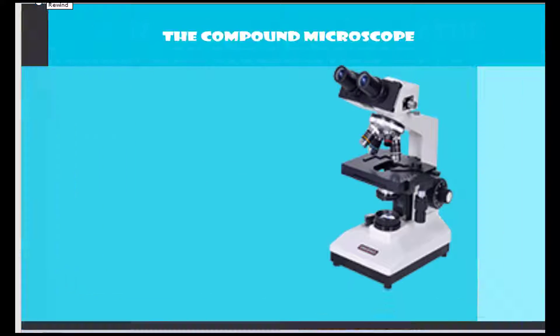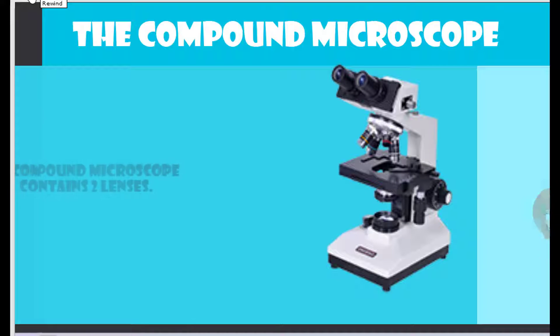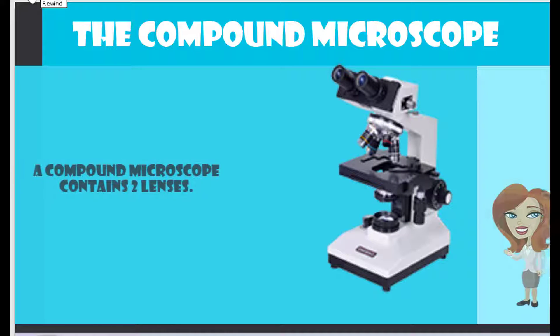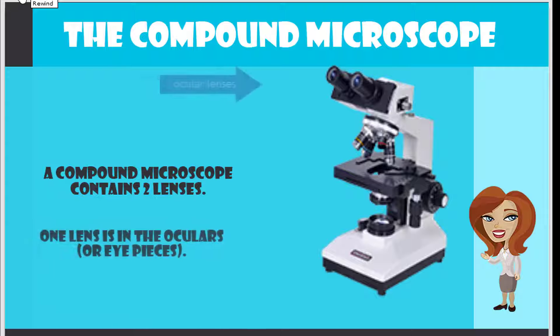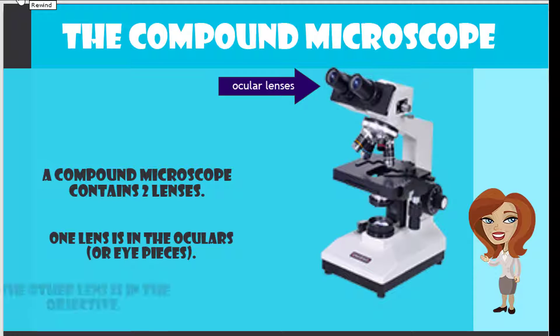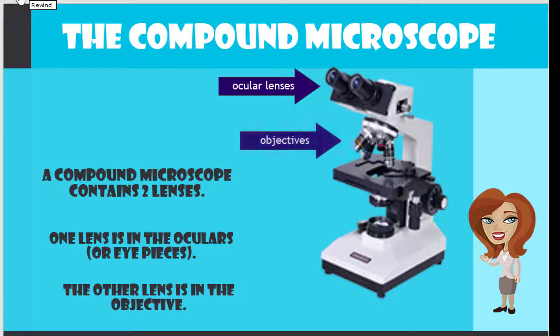The compound microscope contains two lenses. One lens is in the oculars, and the other lens is in the objective.